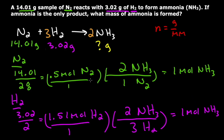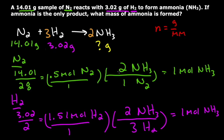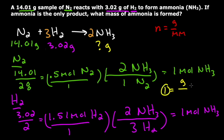Each of these reactants can produce 1 mole of NH3. Because they both produce the least amount of NH3, it means both of them run out at the same time. When this reaction is complete, I won't have any N2 or H2 left — I'll have all product. Since I have 1 mole of NH3, I convert to grams using the molar mass of NH3, which is 17. So 17 times 1 gives me 17 grams of NH3. That's the answer.